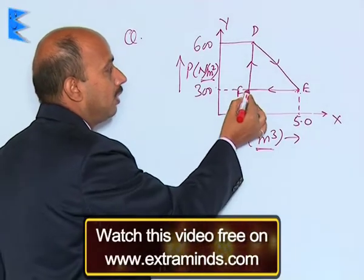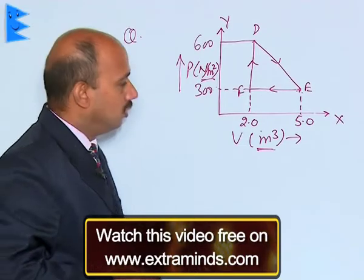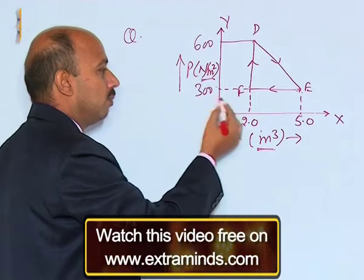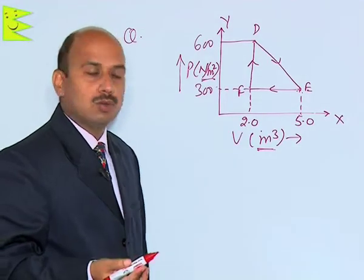Again from F to D, you can see the pressure changes from 300 to 600, but volume remains constant. So the work done is 0.